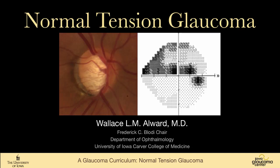Normal tension glaucoma, sometimes called low tension glaucoma. Really, the pressure is not low — it's in the normal range. So I think normal tension glaucoma is probably a better term.